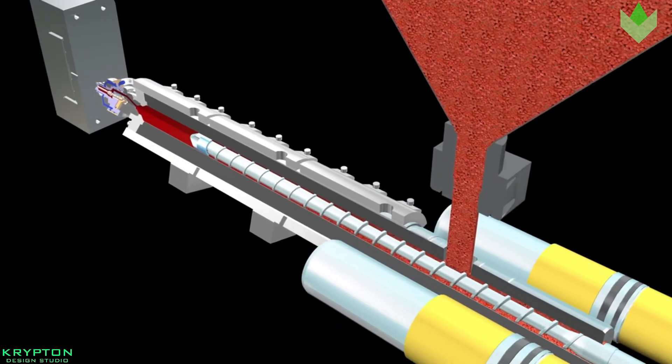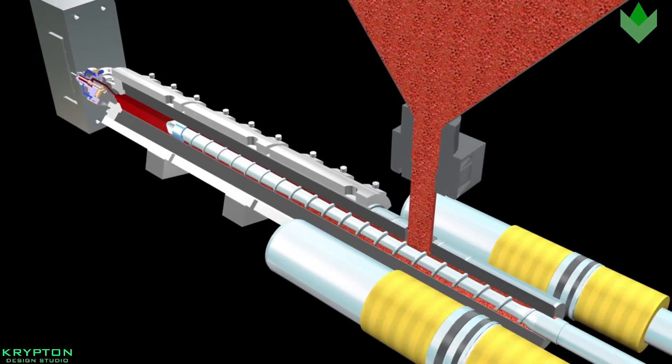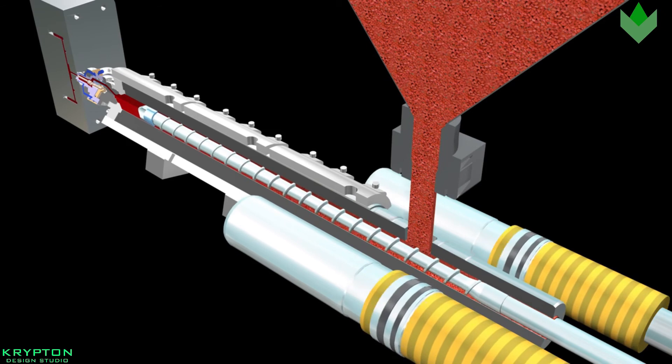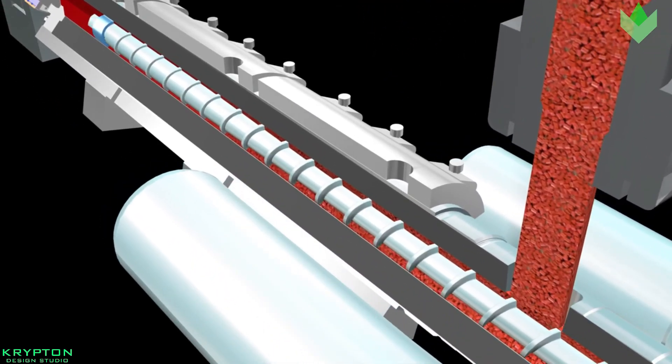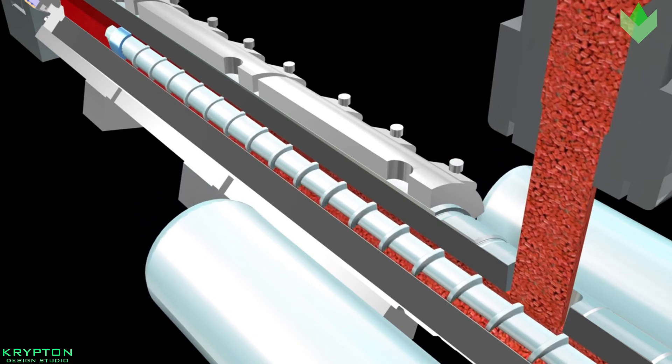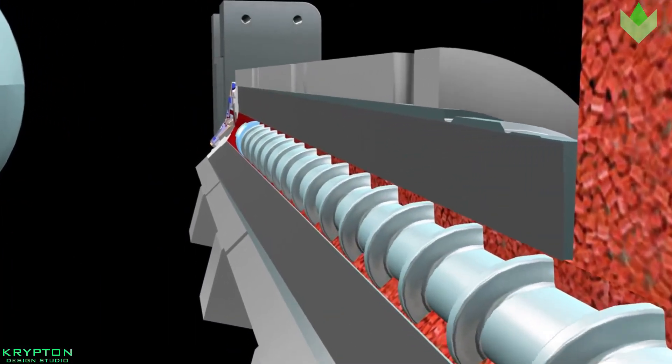Once the cavity is filled, a holding pressure is maintained to compensate for material shrinkage. In the next step, the screw turns, feeding the next shot to the front of the screw. This causes the screw to retract as the next shot is prepared.